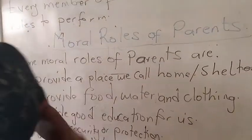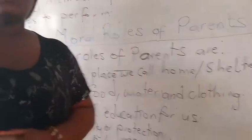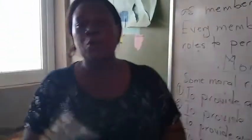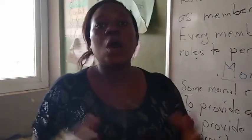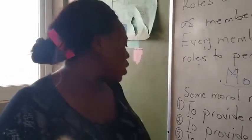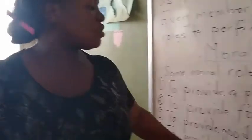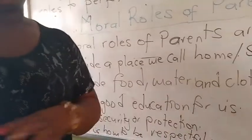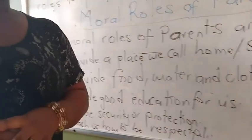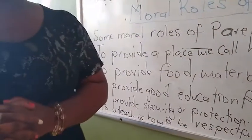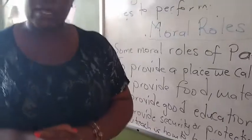Number 3, to provide good education for us. Our parents are supposed to provide a good source of education for us. Number 4, to provide security or protection. We are supposed to feel safe when we are with our parents.